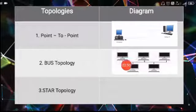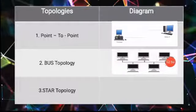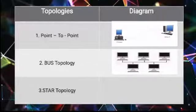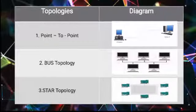The second one is bus topology. Here, all the computer systems are connected to one central backbone channel. It is a single communication line or one main cable to which all nodes are directly connected. For example, if system A wants to transfer data to system D, the data first goes to the backbone channel and is then distributed to the other systems.